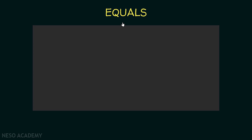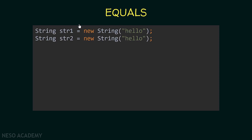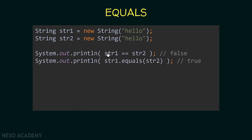Now let me show you an example of using the equals method of objects. I created two strings str1 and str2 using the new keyword, so str1 contains a different address than str2. I'm printing str1 == str2 — this displays false because the addresses are different. Now I'm using the equals method of the object str1 and passing str2 as an argument. The equals method is going to compare the content of str1 with the content of str2 — in this case they are equal, so we will see true printed. The equals method compares the content instead of addresses.